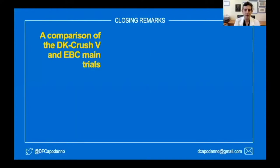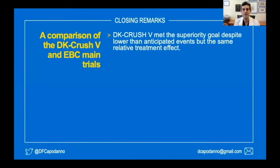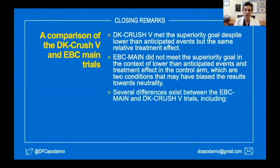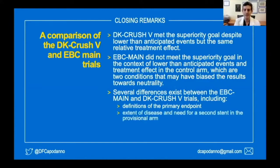In conclusion, the DK Crush 5 trial met the superiority goal despite lower-than-anticipated events, with the same relative treatment effect producing a positive result. In ABC Main, the superiority goal was not met, in the context of both lower-than-anticipated events and lower-than-anticipated treatment effect — two conditions that may have biased results toward neutrality. Several differences between the trials must be acknowledged: endpoint definitions, extent of disease, second stent rate in provisional arms, performance of the provisional strategy, and techniques used in systematic two-stent arms.